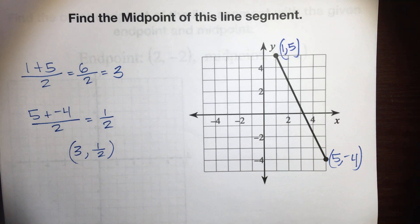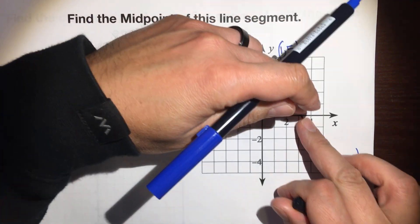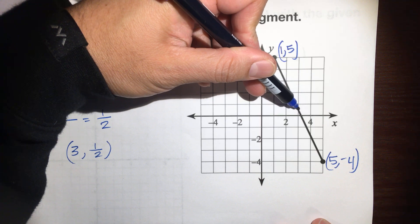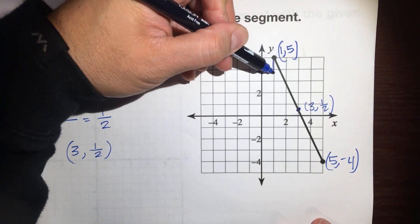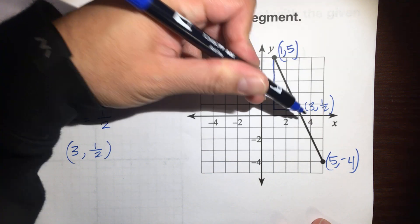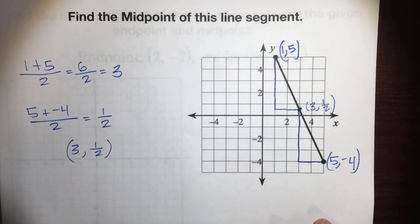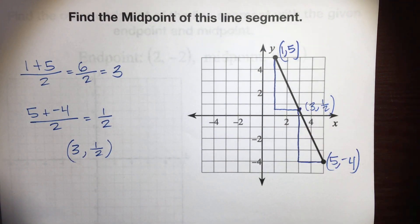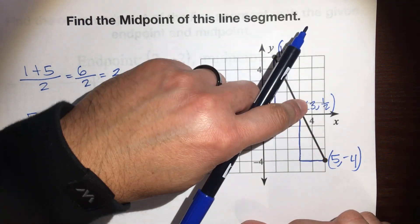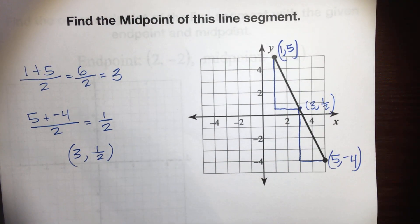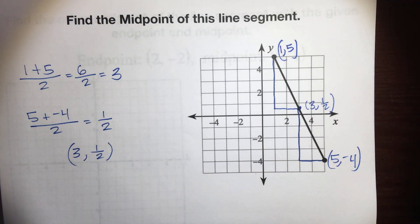Our midpoint is 3 and one-half. Let's make sure it's on the line — 1, 2, 3, then halfway, and it lands on the line. Let's draw a right triangle to confirm: down 4 and a half, to the right 2 from the first endpoint — and from the second endpoint, up 4 and a half, to the left 2. Same distance each way, so these two triangles are congruent. That confirms this is the midpoint.